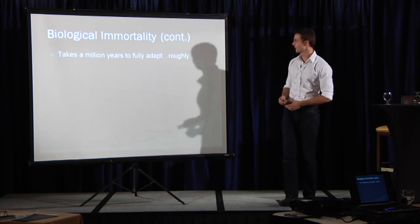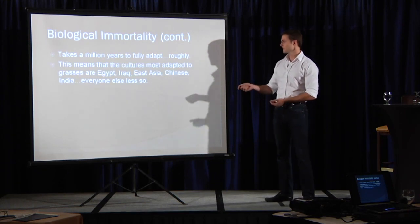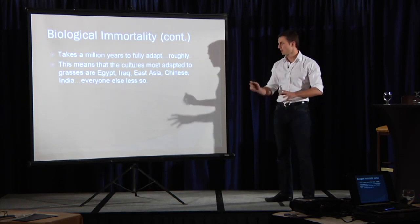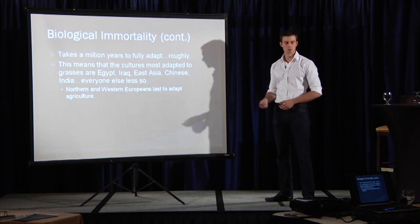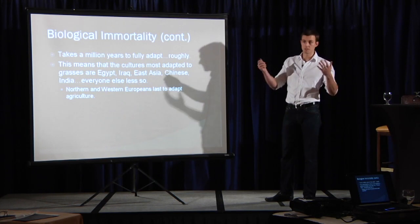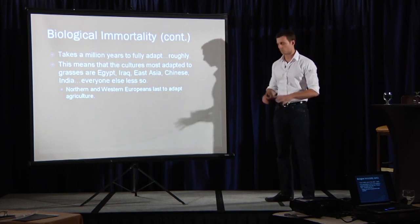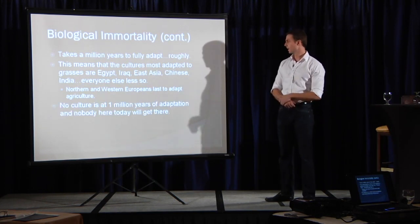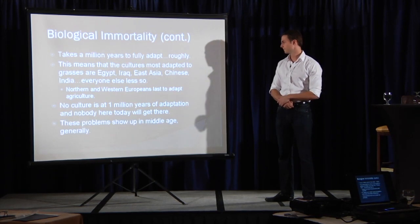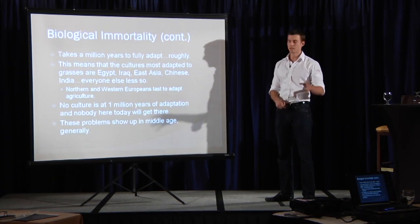So that's why Egypt, Iraq, East Asia, they're better suited. And honkies like me, that's why we're good with milk. Northern Europeans, great with milk, bad with grains, relatively great with milk. Nobody today will get there, and they're going to show up in middle age because of that natural selection.